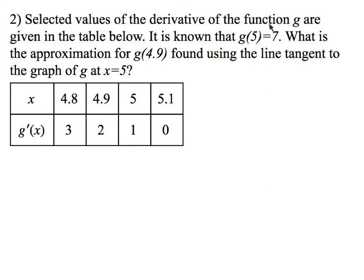Selected values of the derivative of a function g are given in the table below. So you see these are derivative values. They're not g values, they're derivative values. It is known that g(5) = 7. What is the approximation of g(4.9) found using the line tangent to the graph at x = 5?